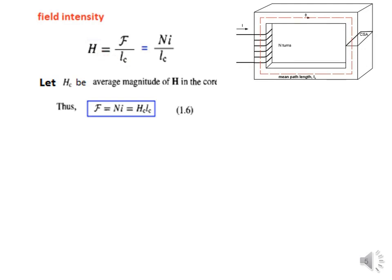The field intensity H is the magnetomotive force divided by LC. LC is the average length of the flux lines through the core — some flux lines flow above the middle line and some below, but we take the average, so LC is the mean path length. Since the force is N times I, H can be written as NI divided by LC. If we represent this average H as HC, then the magnetomotive force equals HC times LC, which also equals N times I.